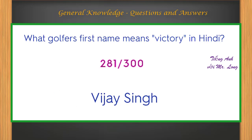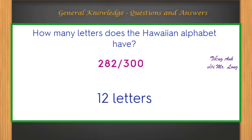What golfer's first name means victory in Hindi? Vijay Singh. How many letters does the Hawaiian alphabet have? 12 letters.